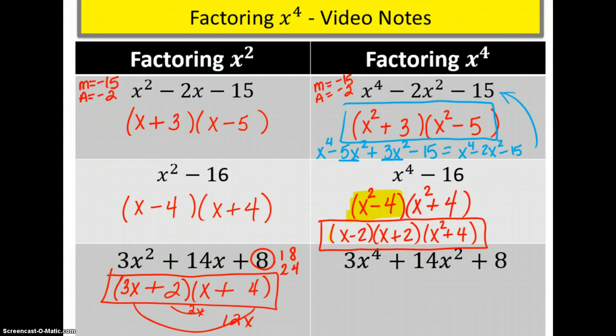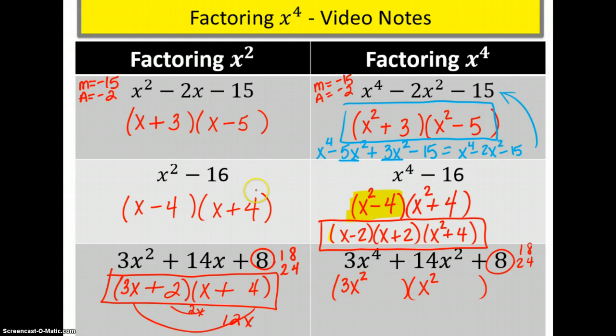Same concept, again, is going to apply to x to the fourths, except this time our 3x to the fourth term is going to come from 3x squared. And over here we're going to have x squared. But we're still looking for the same thing. We need 8, so we need 1 and 8, or 2 and 4. And since we already know what the answer is, I'm just going to go ahead and put 2 and 4 so we can see our smiley faces give us 12x squared and 2x squared for a grand total of 14x squared. And, of course, they're both going to be positive.